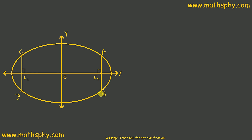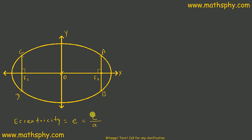That is the basic understanding of the latus rectum of the ellipse. What we need to find is the length of CD or AB — both will be equal. Before that, let's look at eccentricity. Eccentricity E is the ratio of c to a, where c is the distance OF1 (or OF2) from the center, and a is the semi-major axis. So E = c/a, or equivalently c = aE.